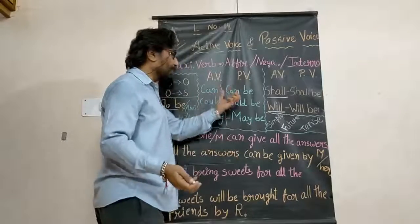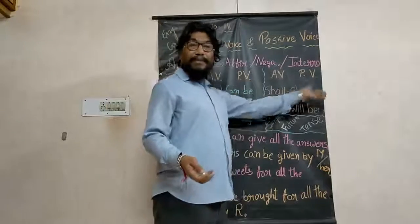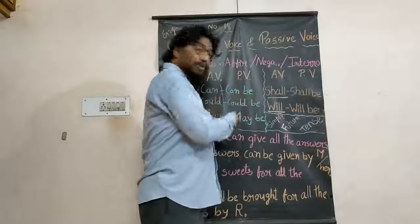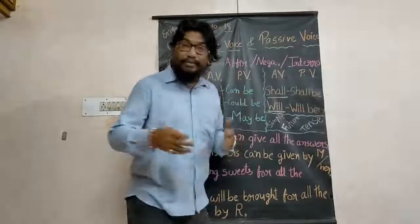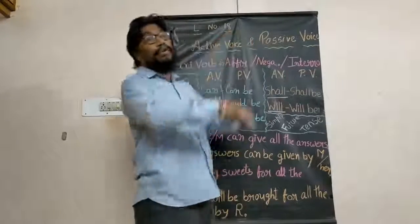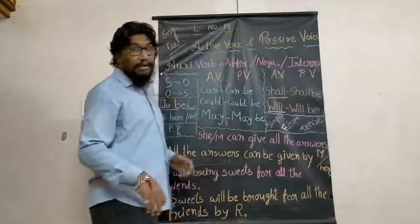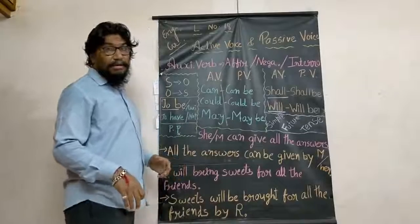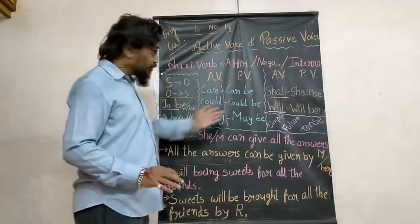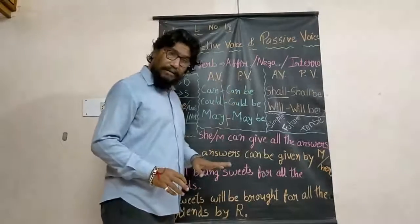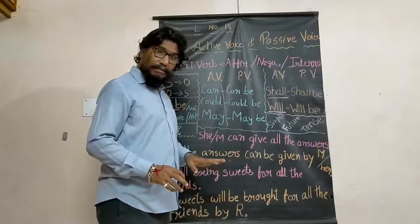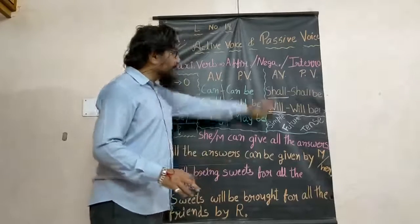Can becomes can be, shall becomes shall be, will becomes will be, may becomes may be, could becomes could be, must becomes must be, might becomes might be, ought to becomes ought to be. These are the auxiliary verbs.